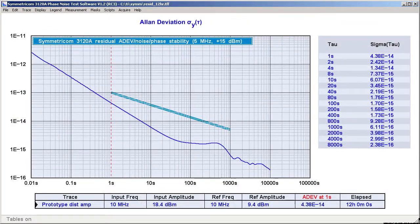The Allen deviation tells a similar story. We're below the 3120A's spec limits, so we can't be entirely sure which device we're really measuring. What we can say is that this simple 3-stage amplifier is a good match for the best commercial frequency standards, just like the 3120A itself. Thanks for watching.